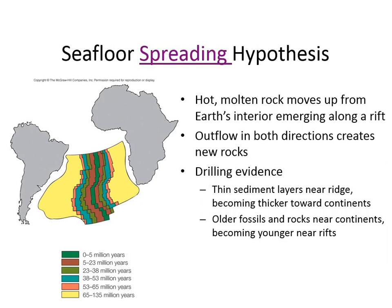Seafloor spreading is creating our ridges. The yellow is the oldest and the darkest green is the newest — this is actually where the liquid from the interior of the Earth is oozing up. Two plates are diverging. So you have old crust out here and young crust here. Your thickest is going to be your yellow, your oldest ocean crust. This is under the Atlantic Ocean.